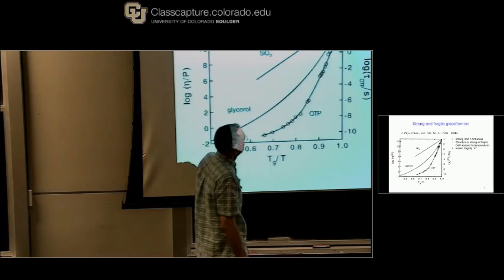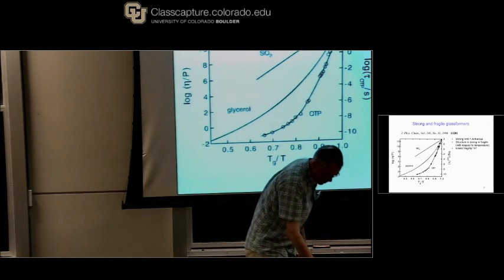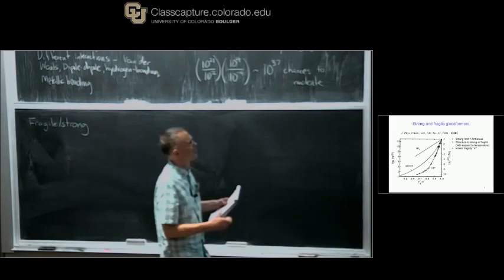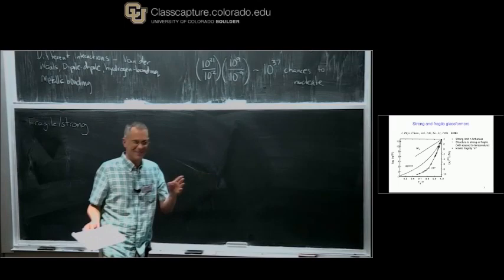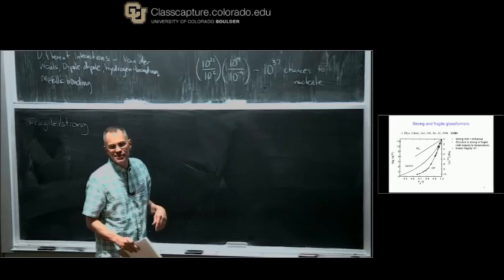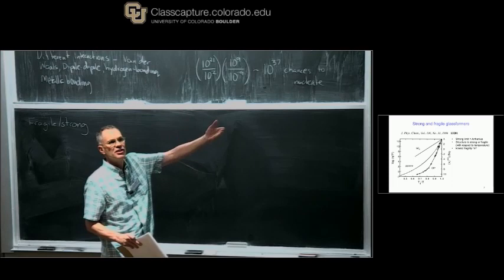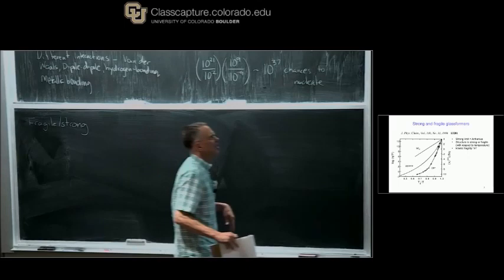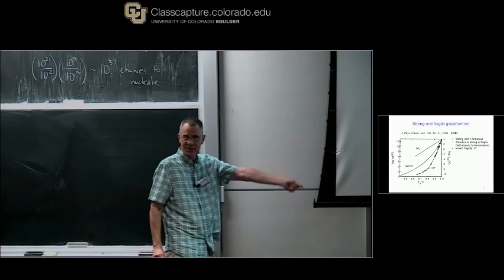The most important thing is what these terms mean. When I was learning this field, I thought fragile or strong had to do with what happened when you dropped the thing on the ground — whether it would break or not. That's not true. A strong liquid is one whose structure is resistant to changes in temperature such that the activation energy remains the same. A fragile liquid is one in which the structure apparently changes a lot with temperature, such that the apparent activation energy changes — it is fragile with respect to the perturbation caused by a change in temperature.